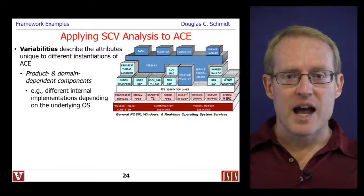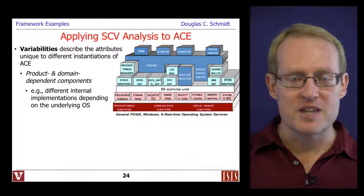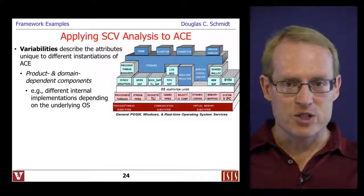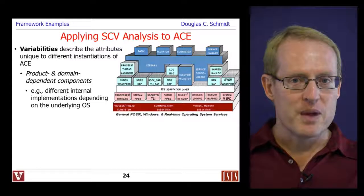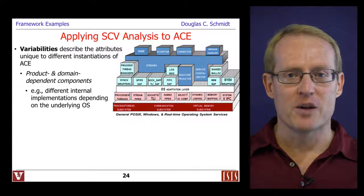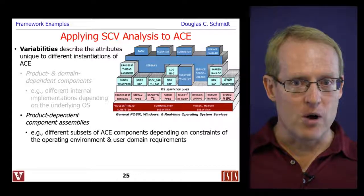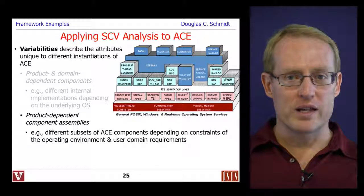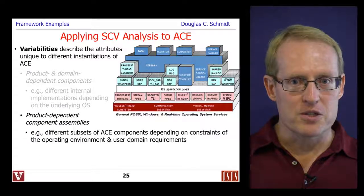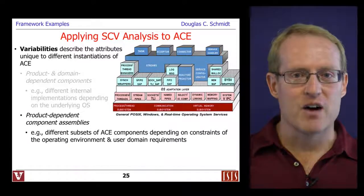There are also some variabilities in ACE. There are product and domain dependent components — many of the implementations depend very heavily on the specific details of the underlying operating systems and protocols. They try to factor out those various diversities and heterogeneities so that the interfaces seen by the application developers are common, but the frameworks and platform implementations have to be fully aware of these kinds of diversities and variabilities. There are also various types of product dependent component assemblies — not all users want to use all parts of this large platform. So it's possible to subset different parts of ACE and extract out the pieces you need, which is important for people running in memory and processor constrained real-time and embedded systems.